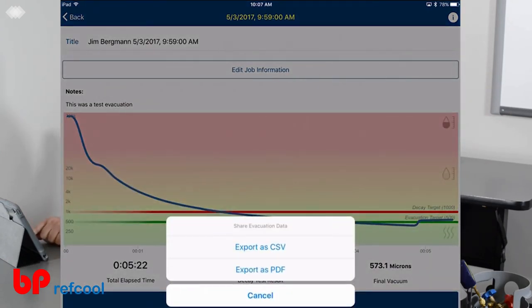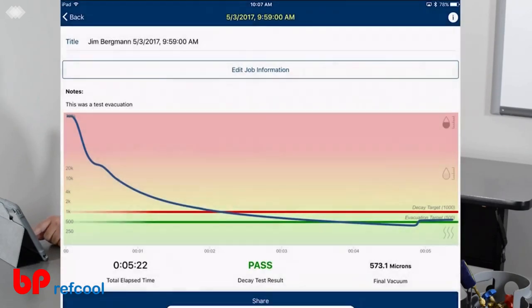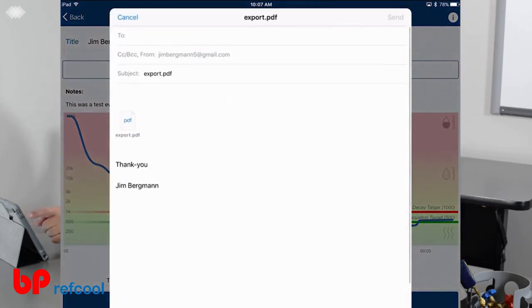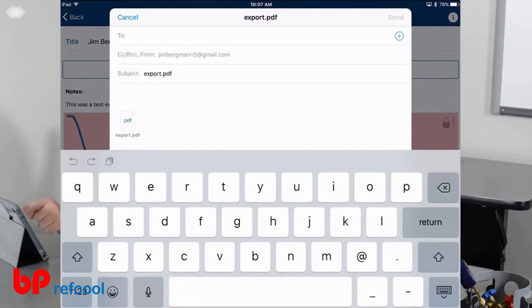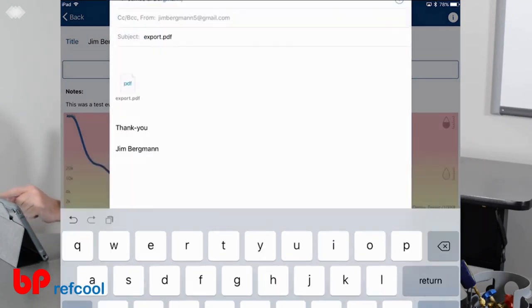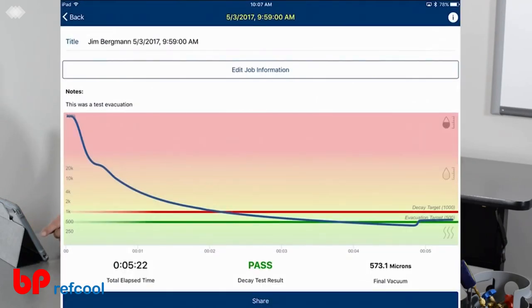Hit check mark. Now we'll add notes to the job. I can share this. I can export it as a CSV or PDF. I'll go ahead and share it, put it in mail. I'll just email it to myself. Hit send. Now that's off into the mail.